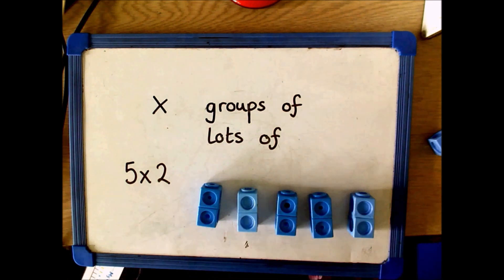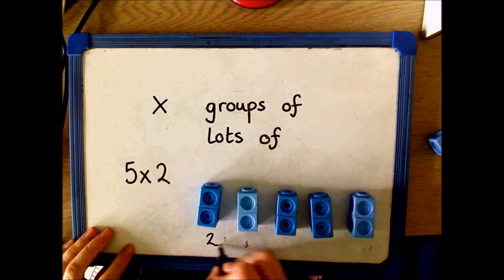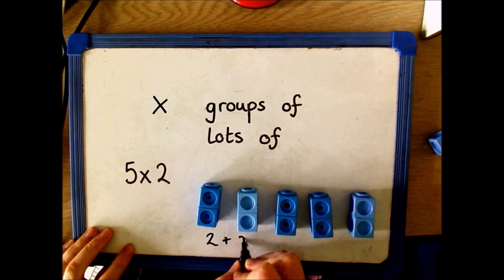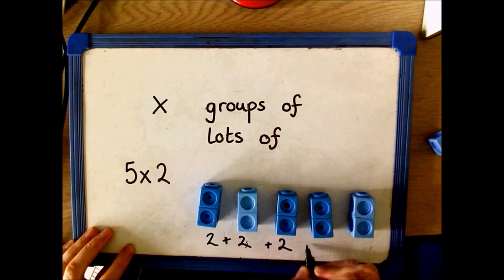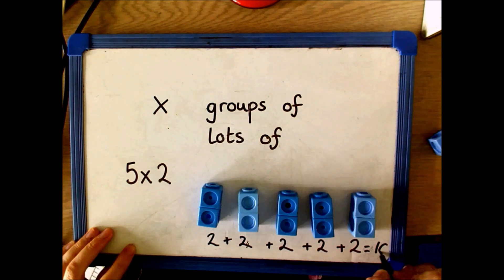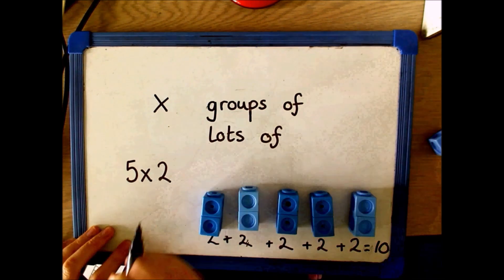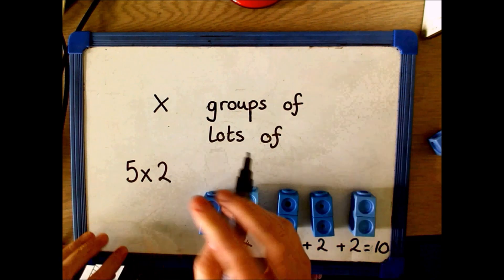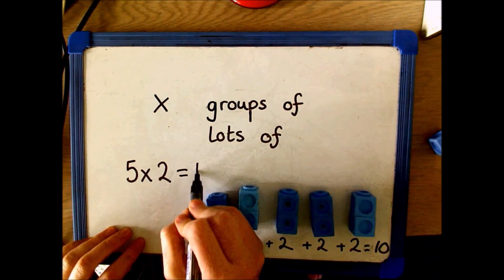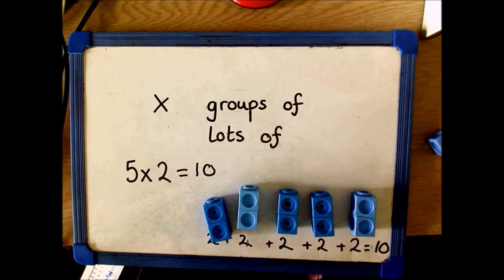Here children are learning that 5 groups of 2 is the same as 2 add 2 add 2 add 2, which equals 10. So 5 times 2 equals 10.